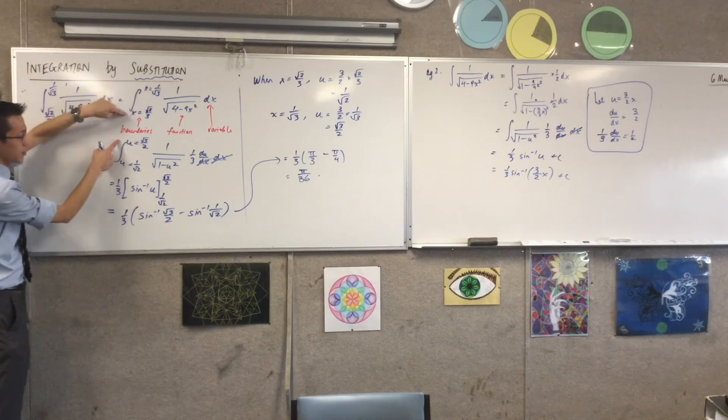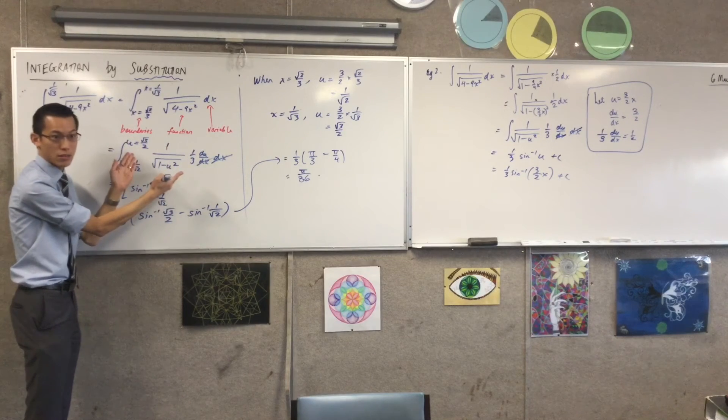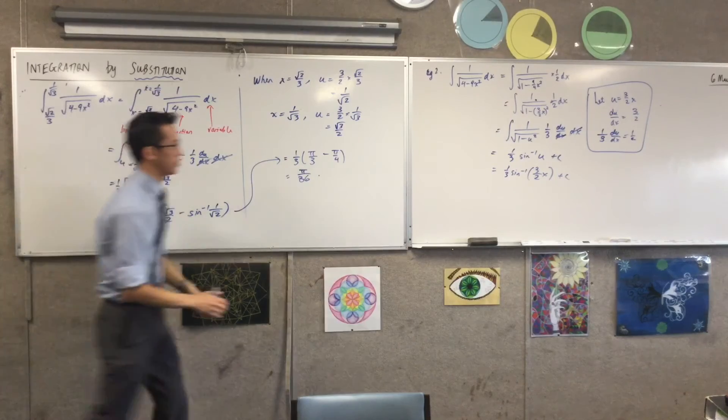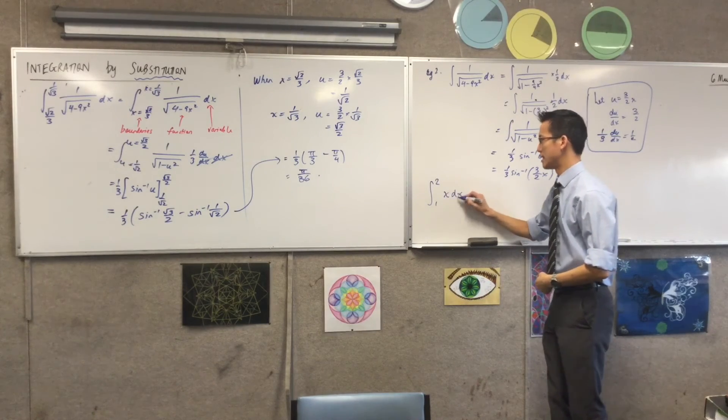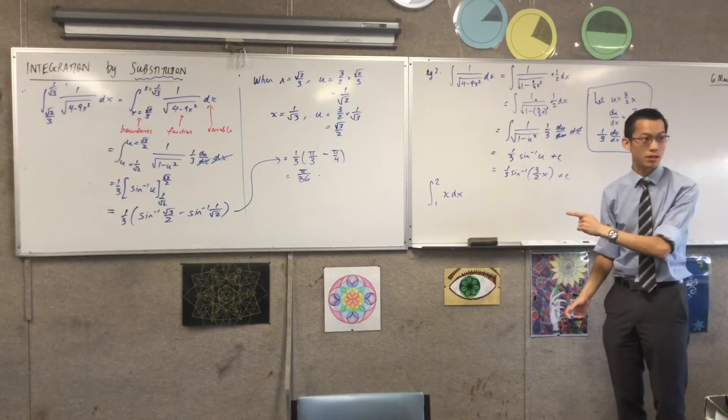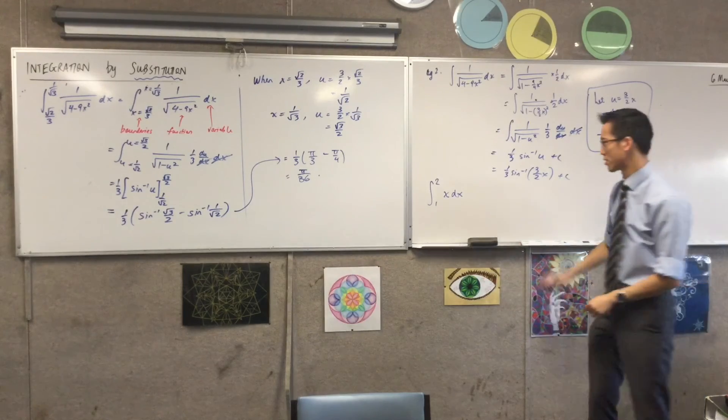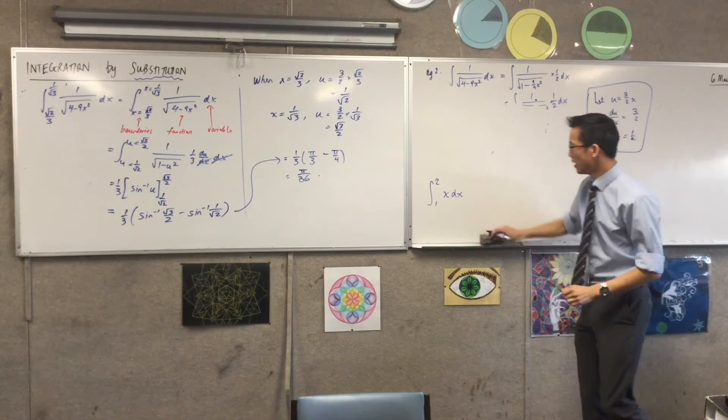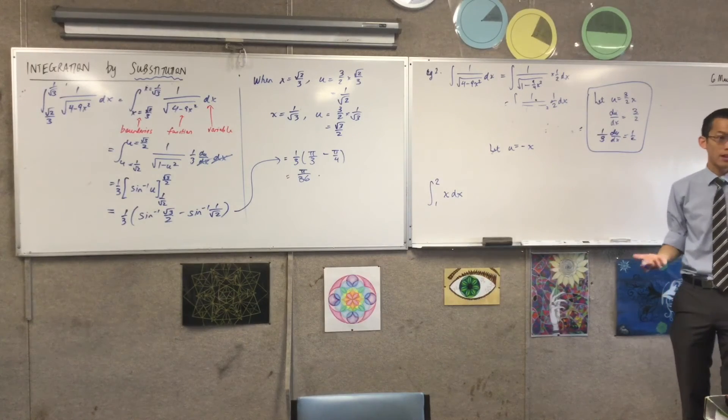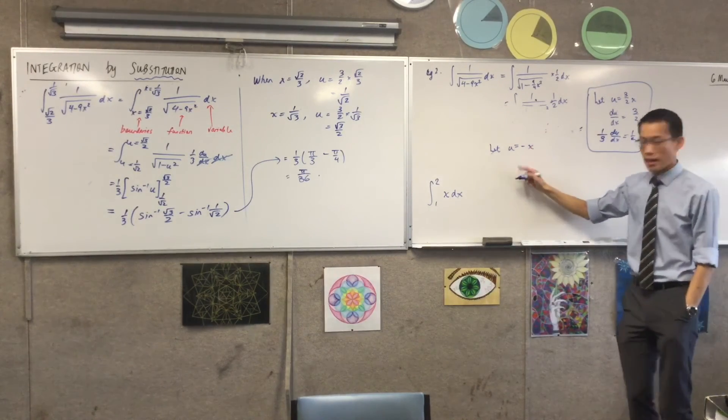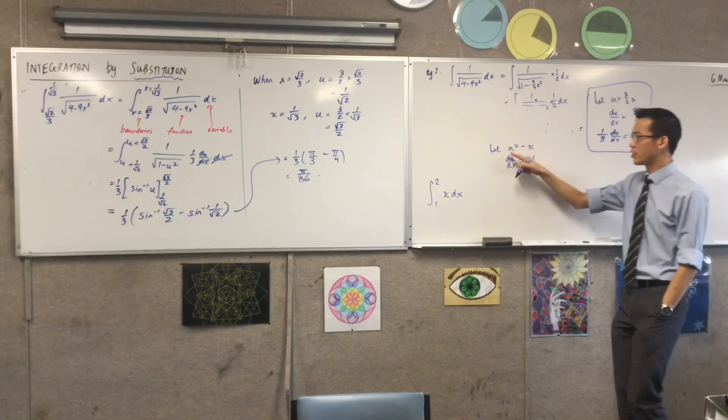So let's just do a really, really trivial example. If I went from, say, integral from 1 to 2 of x dx, this is pretty trivial. That's a trapezium, isn't it? Do you see where x is 1 to 2? Now, obviously I don't need to use substitution for this. But just suppose I said, let u equal -x. I can do any substitution I like if it's convenient to me. So in this case, I'm going to say du/dx is -1. And x is actually going to be equal to -u. Does that make sense? That's something I'm going to substitute in.